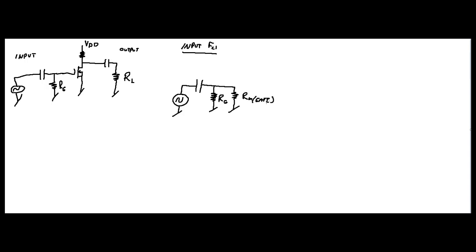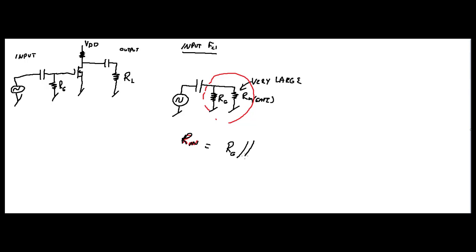Now you may recall that the input resistance of your gate is very, very large. So the total resistance Rn is going to be equal to Rg in parallel with Rn of your gate.